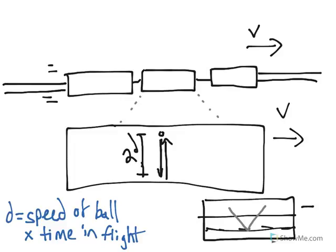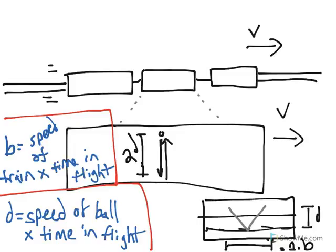So the distance it has traveled in this direction is still D. However, it also travels a distance horizontally here. Let's say this is equal to 2 times B, where B is the speed of the train times the amount of time the ball has flown. I'll draw these more clearly on the next page.